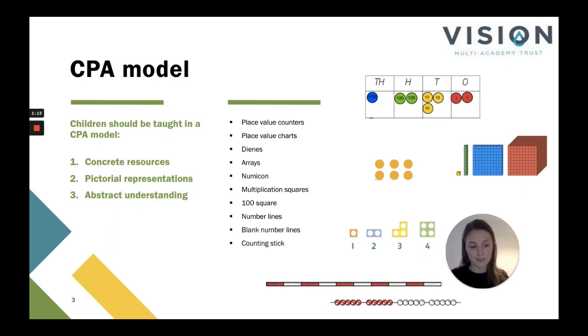The P of CPA stands for pictorial, so pictures. And the A stands for abstract. So that means just purely numbers and symbols.